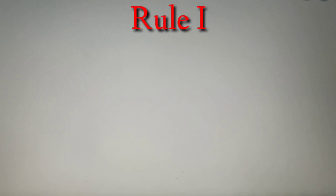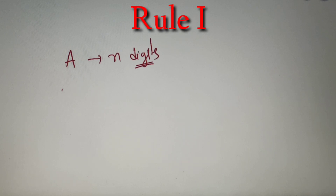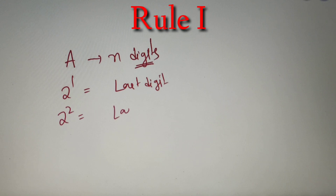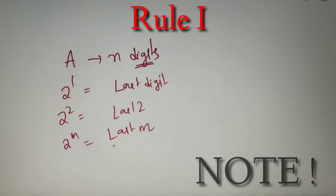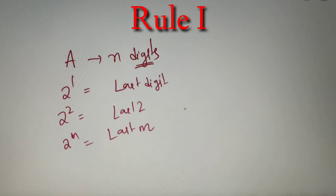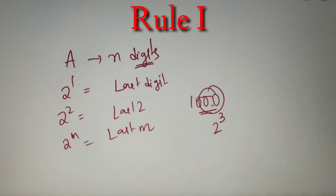Let's begin with the number 2 raised to power n. If the number provided to us is a, then a is divisible by 2 raised to power n if the last n digits of the number are divisible by 2 raised to power n. So if the number is 2 raised to power 1, we check the last digit; if 2 raised to power 2, we check the last two digits; and so on. One important point to note: if the last n digits of the number are zeros, then the number is also divisible by 2 raised to power n. For example, 1000 is divisible by 2 raised to power 3 because the number ends in three zeros. Let's now solve some examples to build up our concept.